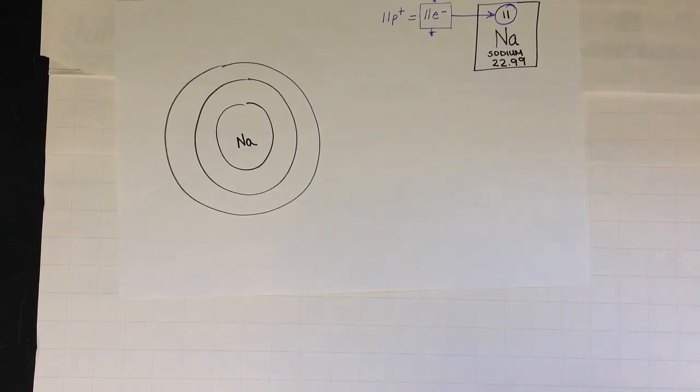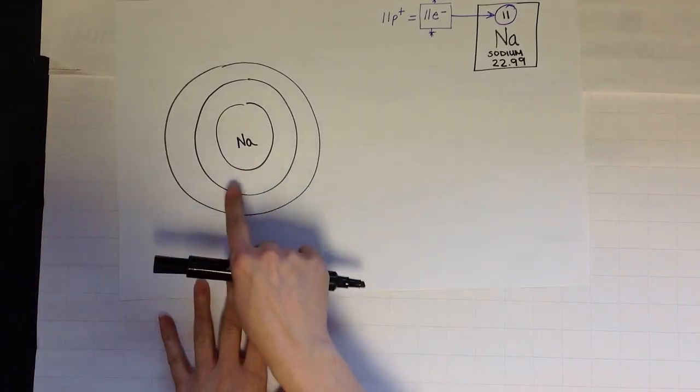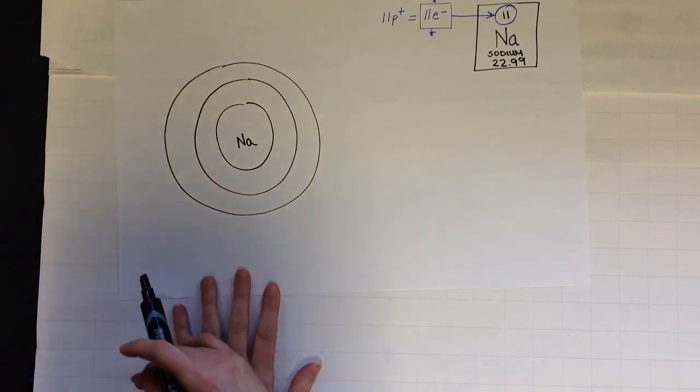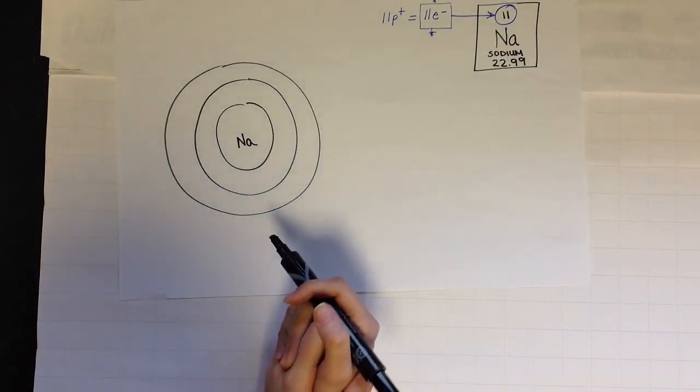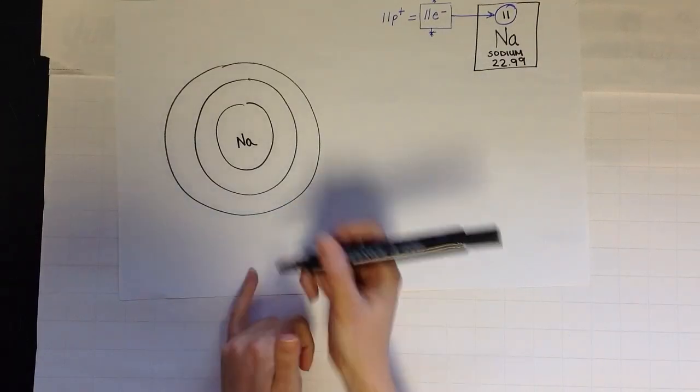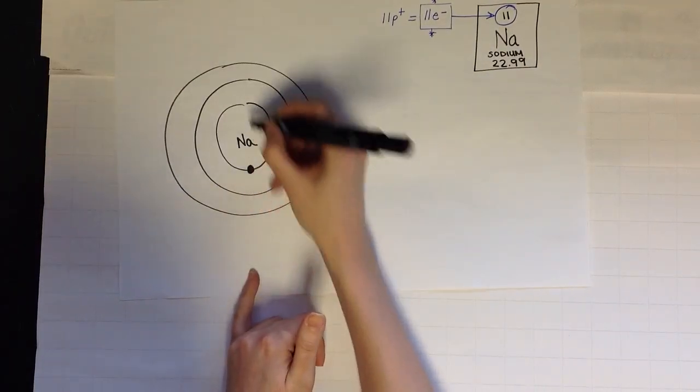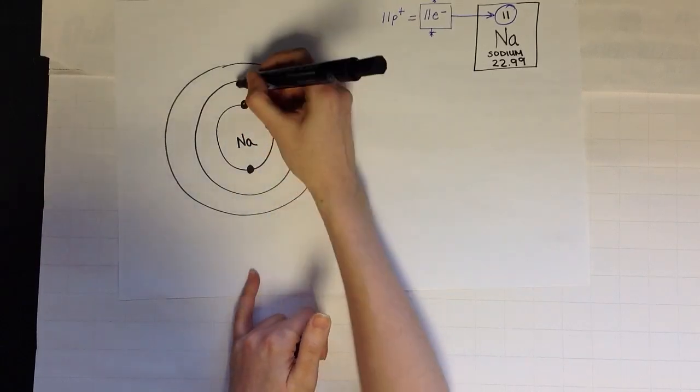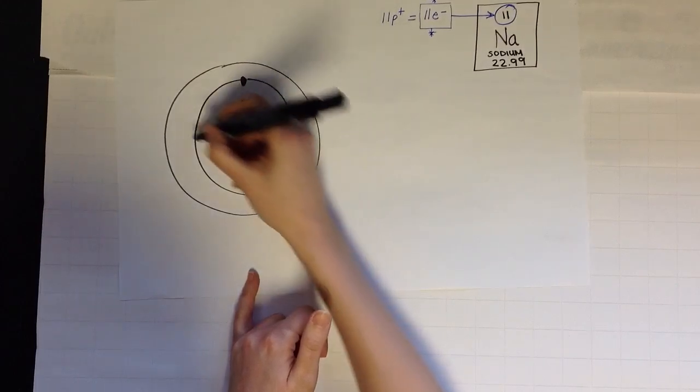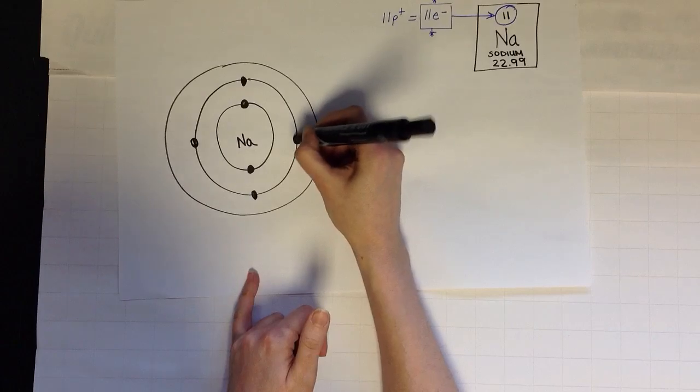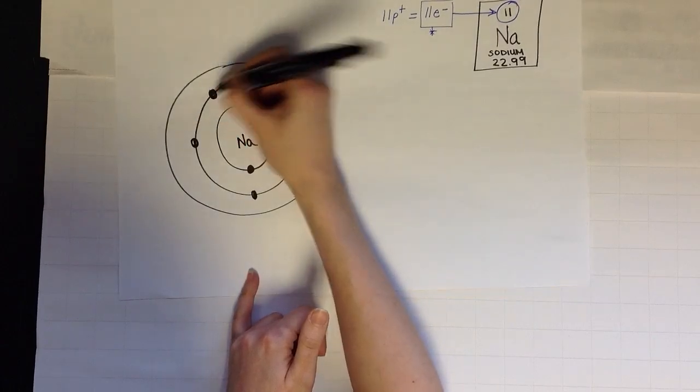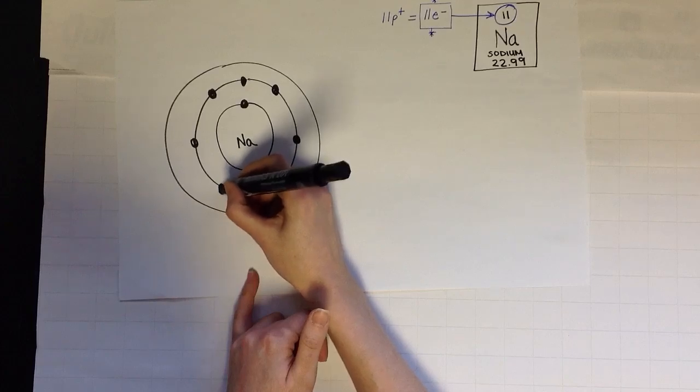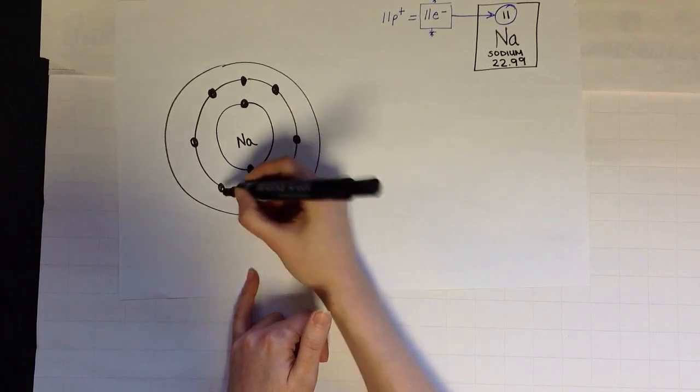Let's look at another example. Sodium. Sodium has an atomic number of 11 so we know it has 11 protons and 11 electrons if it's neutral, and we'll assume it is. Sodium has one, two, three energy levels. So I have 11 protons. Remember the rule: the first energy level can only hold up to two. So there's one, two. The second one can hold up to eight. So one, two, three, four, five, six, seven, eight.